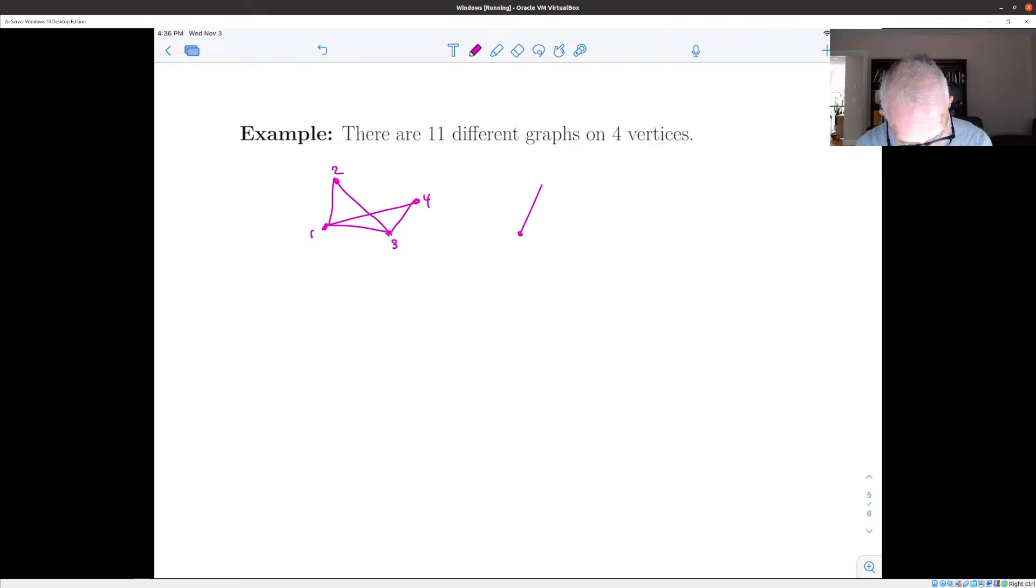So for instance, the one I've just drawn would be the same as this one, where instead of going one, two, three, four, I went one, three, two, four. This actually may be the same. No, this one has an edge connecting two to four. This one does not. But up to that, if you rearrange the vertices, they're the same. And that's what we want to count.